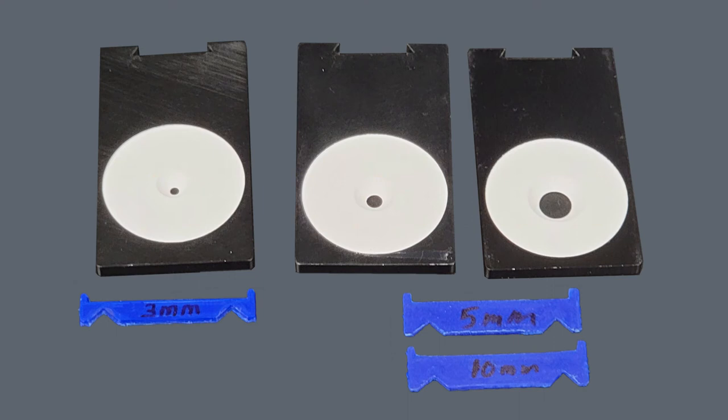There are three shims, one for the 3mm mask and two identical shims which can be used either for the 5 or the 10mm mask.